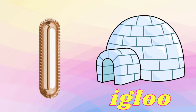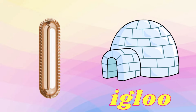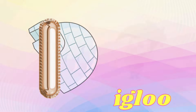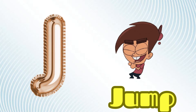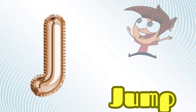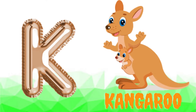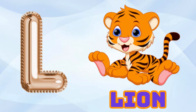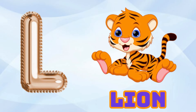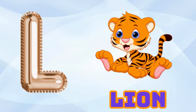I is for Igloo, I-I-Igloo. J is for Jump, J-J-Jump. K is for Kangaroo, K-K-Kangaroo. L is for Lion, L-L-Lion.